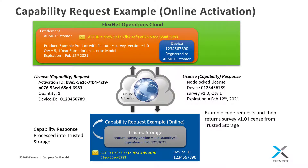This capability response will then be processed into trusted storage. The example will then perform a license request for the survey feature from trusted storage, followed by a license return back to trusted storage. The View example can then again be run after this license activation to view the details of the licenses in trusted storage.